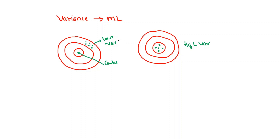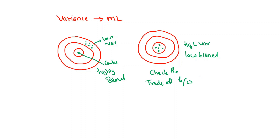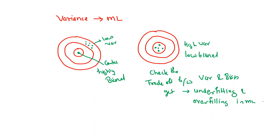This is your center, and our data points should be closer to it. Data points far from the center are highly biased, while data points close to the center are low biased but may have higher variance. By using the trade-off between variance and bias, we can identify underfitting and overfitting in a machine learning model.